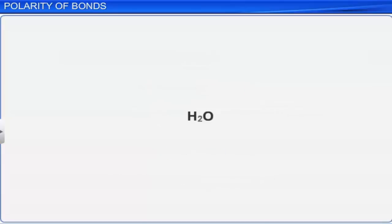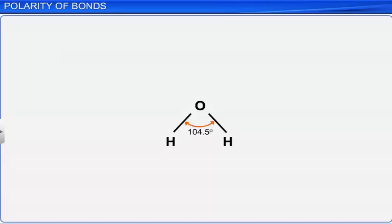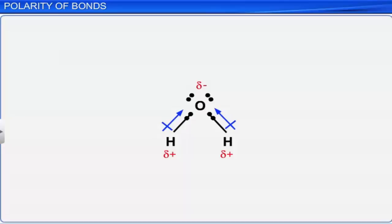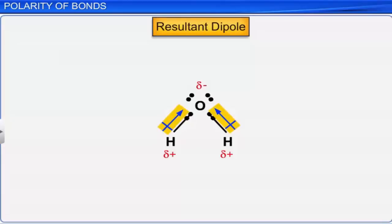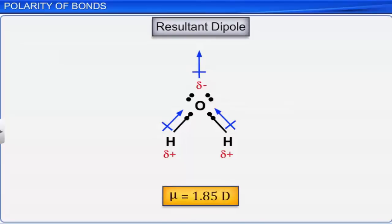Let us take another example: a water molecule. In a water molecule there are two oxygen-hydrogen bonds. It is angular in shape with a bond angle of 104.5 degrees. Oxygen being more electronegative, the shared electron pair stands very close to the oxygen atom, giving it a partial negative charge while hydrogen gets a partial positive charge. The bond dipole lies towards the oxygen atom, and the net dipole moment of water is 1.85 Debye.